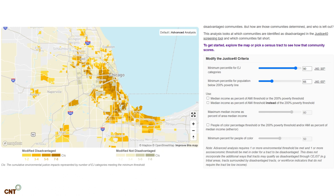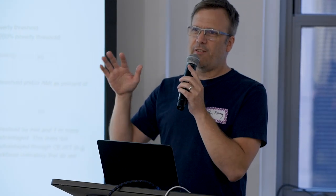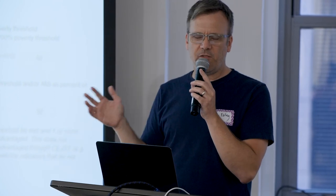We suggested another number that's also used often: a percent of area median income. The area median income is the median income of the CBSA — basically a metro region. Our CBSA includes a little bit of Wisconsin, a little bit of Indiana, and about seven counties around Chicago. We're saying if you are at 80% of AMI, that would be the threshold — and we give you sliders to adjust that.